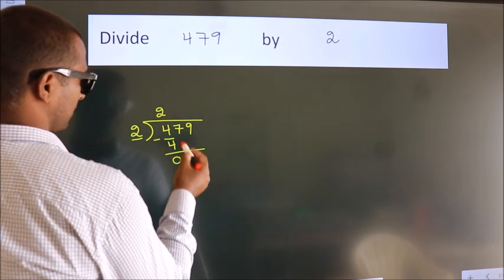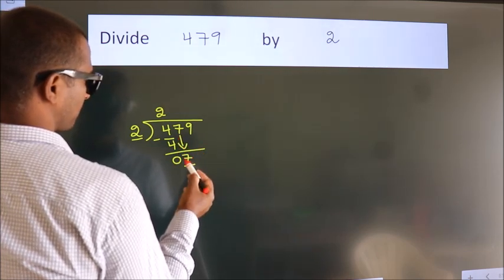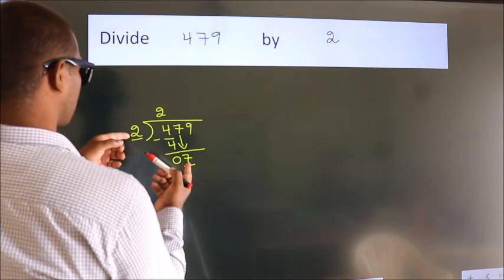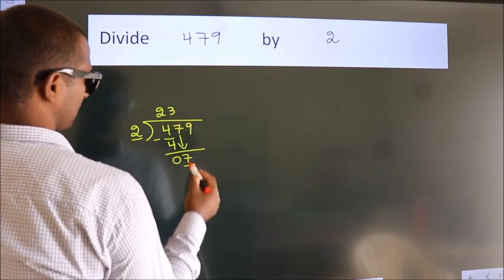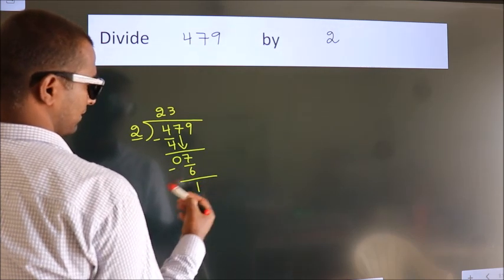After this, bring down the beside number, so 7 down. A number close to 7 in the 2 table is 2 times 3 equals 6. Now we subtract. We get 1.